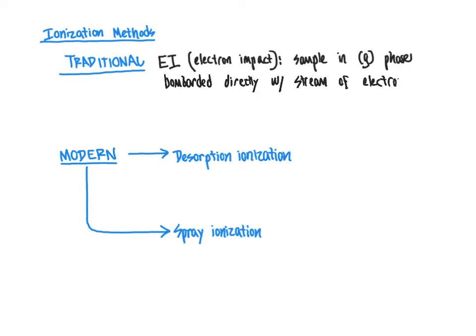Due to the fact that being hit directly with a stream of electrons is a rather harsh, aggressive, high-energy method, samples subjected to this traditional EI electron impact ionization are very prone to fragmenting. Compounds often fragment so much that the actual molecular ion is not even observed — only fragments of the initial molecule are seen. That makes it challenging to determine the original molecular weight or molecular formula of the compound, because the molecule is essentially blown to smithereens. So this is referred to as a hard ionization technique.